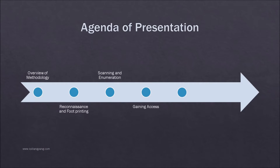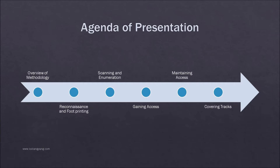We will then dive deeper into different phases, namely reconnaissance and footprinting, scanning and enumeration, gaining access, maintaining access, and lastly covering tracks. Before we go straight into today's lecture, we have to know exactly what Advanced Persistent Threat stands for.